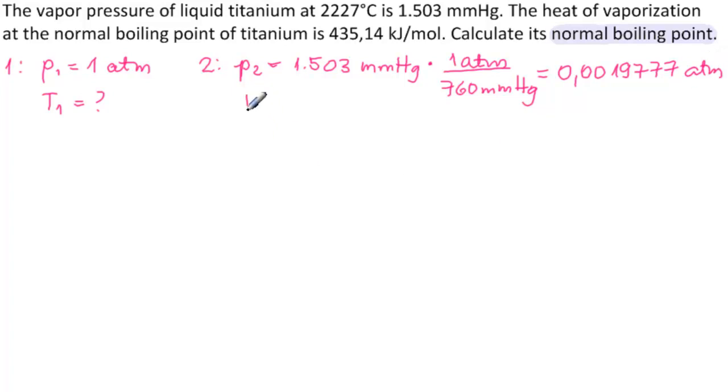And then we have T2 equals 2,227 degrees Celsius, but we need Kelvin. So that would be plus 273, which is 2,500 Kelvin.